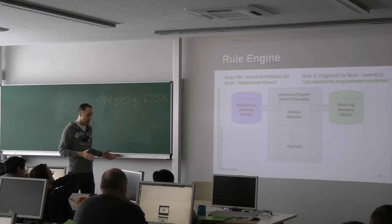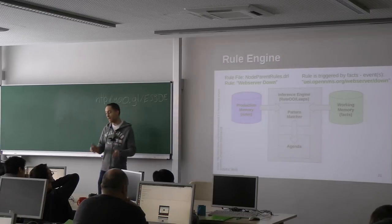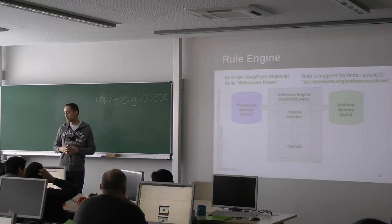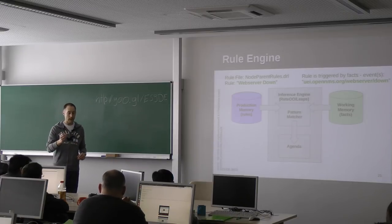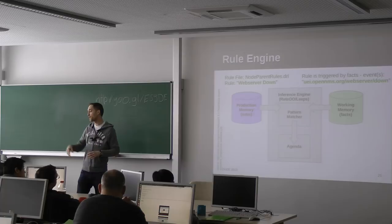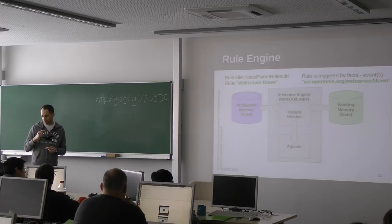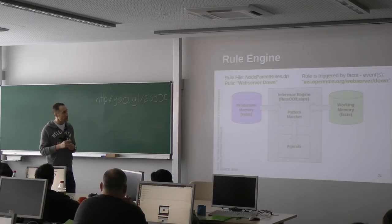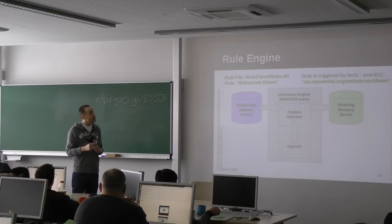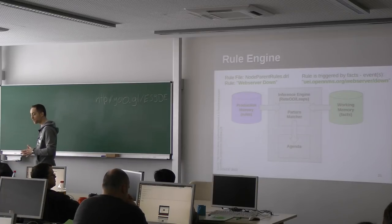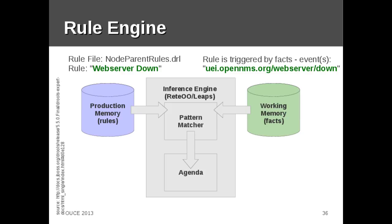The first thing we have to do when writing a rule is define a pattern — a rule pattern. The rule engine runs a pattern matching process. When you insert a fact (in our case, an event), and the rule engine finds an appropriate matching rule, that rule is executed. You also have the possibility to define the order in which rules are executed by the rule engine — that's what the salience attribute means.